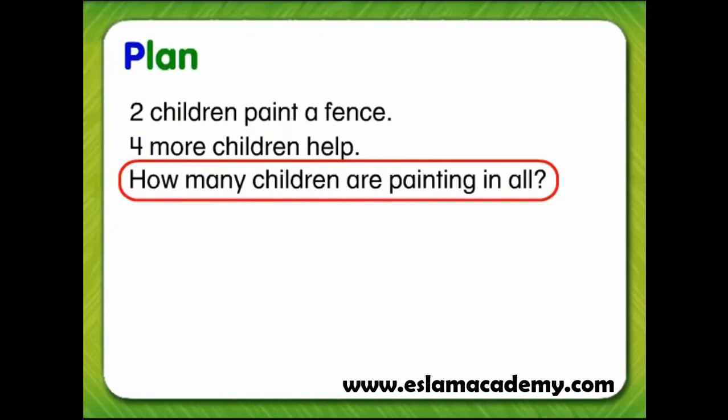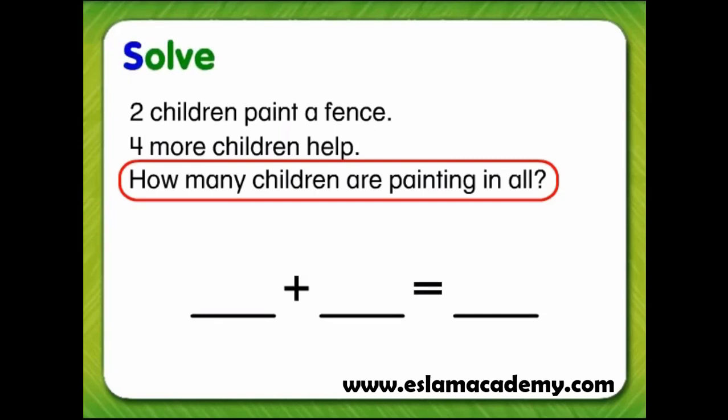Now we need to choose a plan to solve the problem. Think about a good plan that can help solve this problem. The question asks us to find the total number of children, so we can use an addition number sentence. Now it's time to solve the problem.